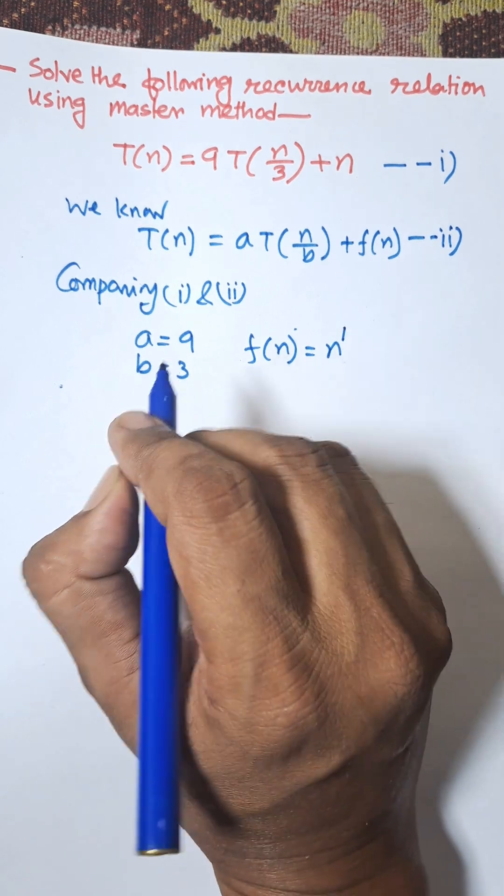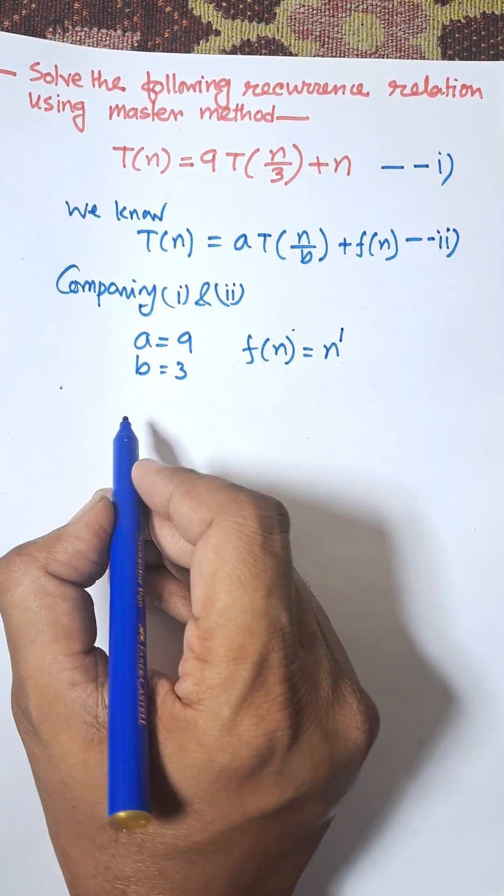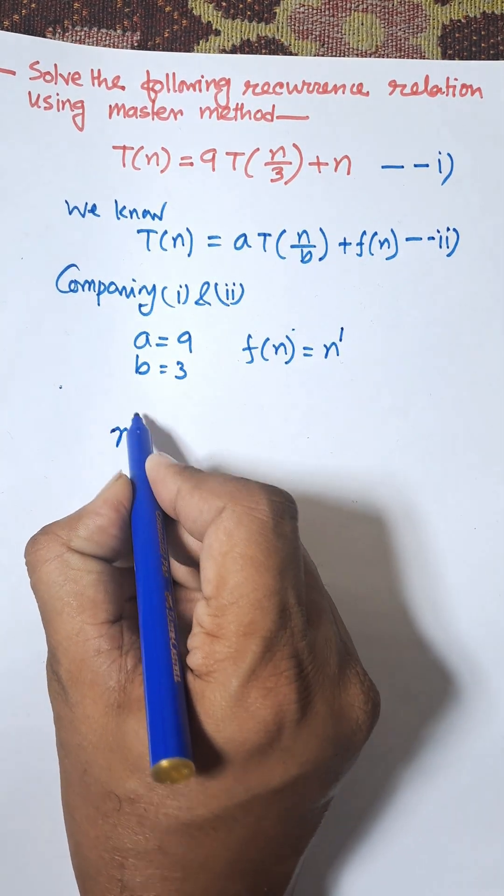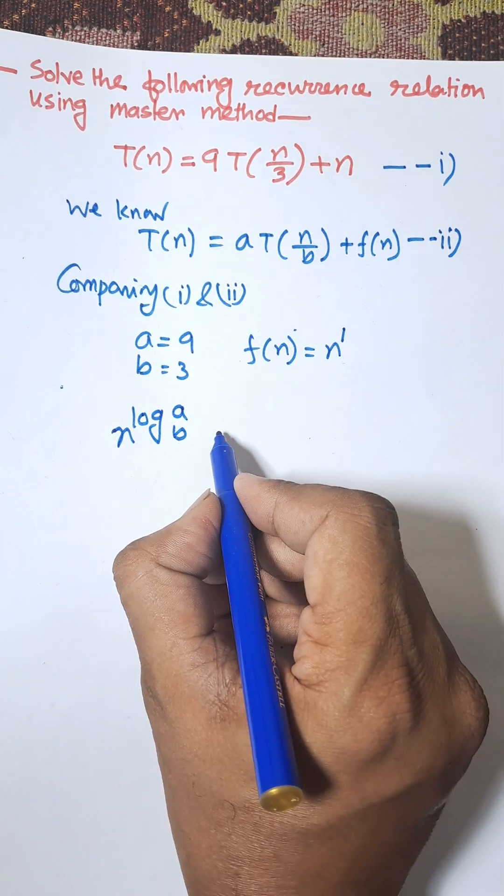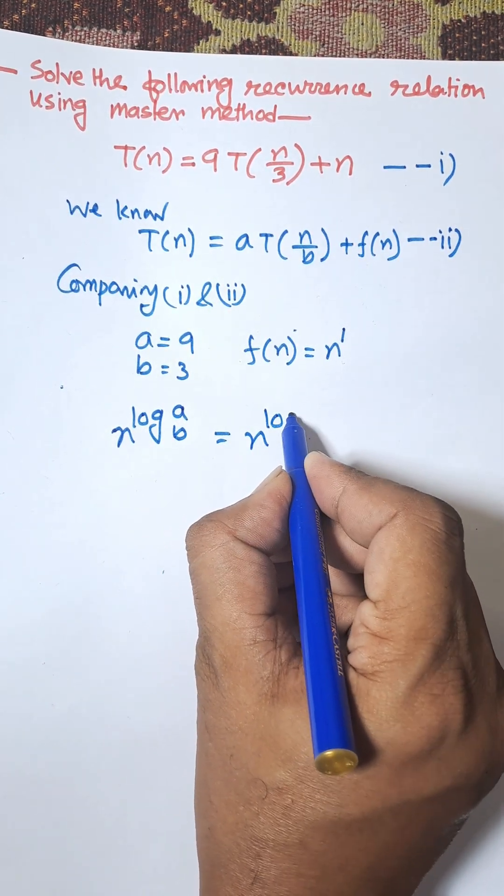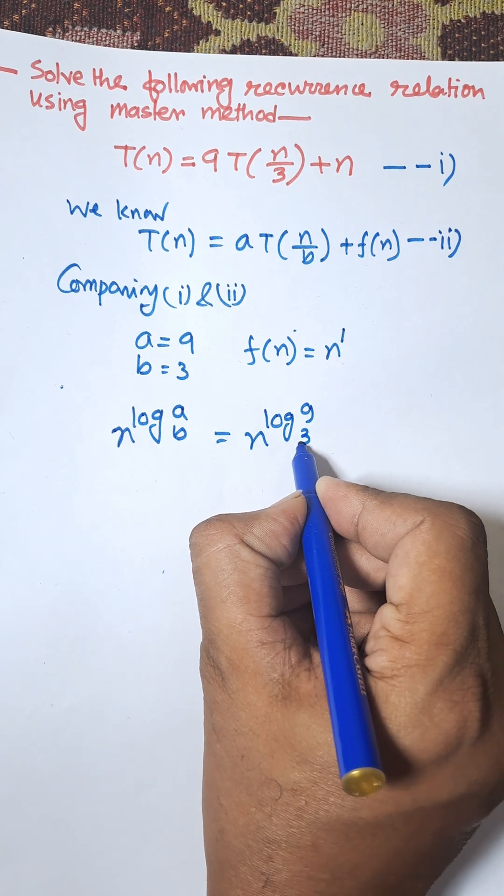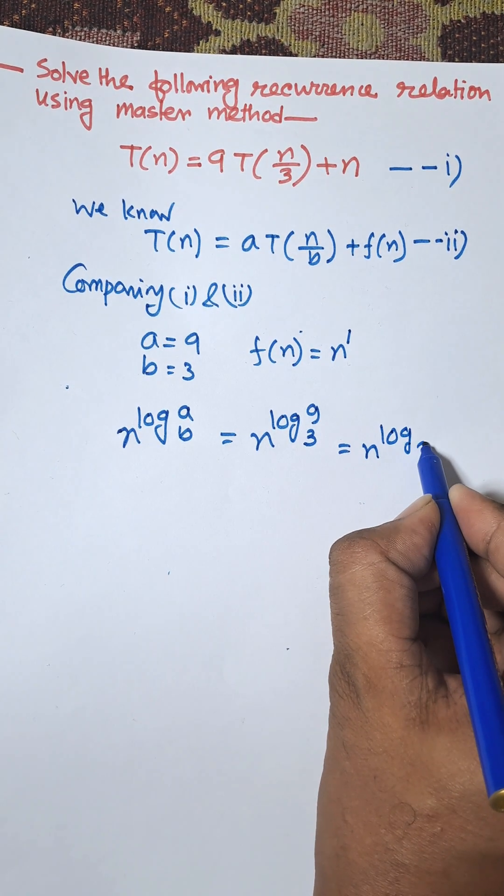Mean n to the power one. Now we need to find first of all n to the power log base b of a. That's mean n to the power log base 3 of 9.